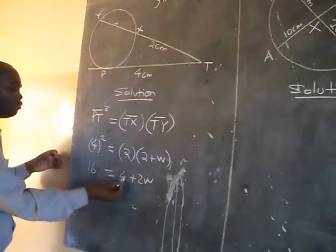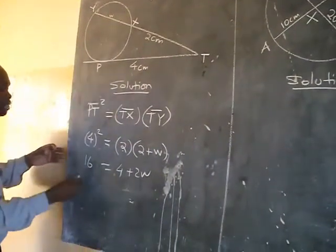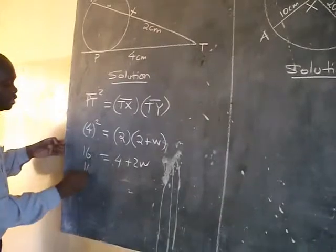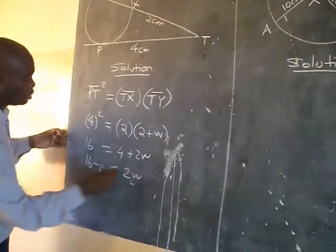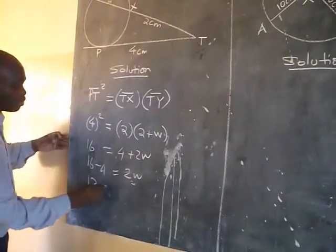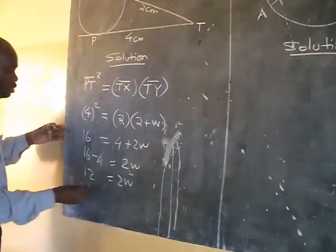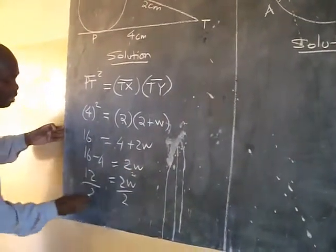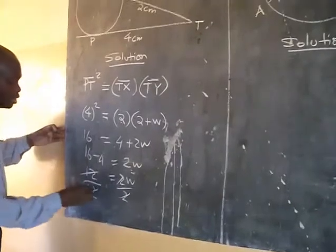So plus 2w. Then 4 will be transferred to the other side and subtracted because there it is positive. 16 minus 4 equals 2w. When you subtract to get 12 equals 2w. So divide by 2 by 2. This goes and we have 6.